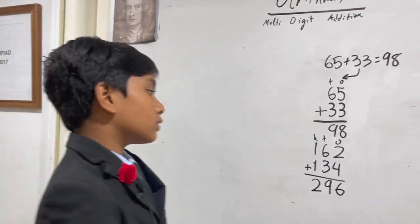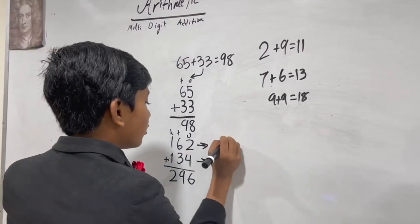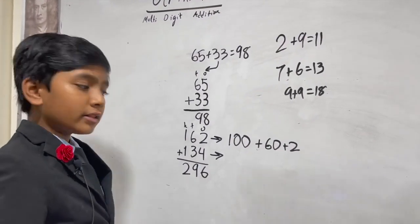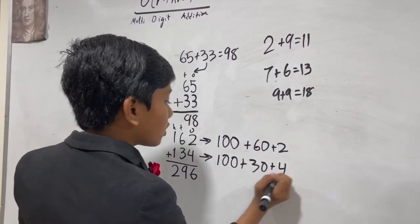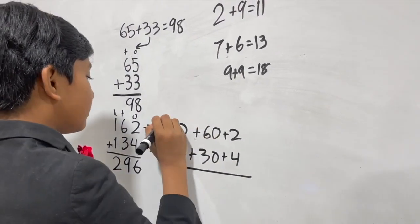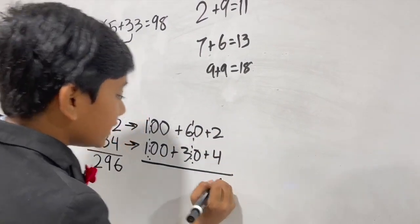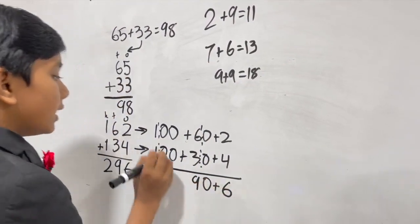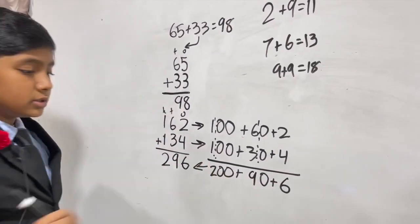I can actually explain the reason why this works. So, this is equal to 100 plus 60 plus 2 in expanded form. We talked about place value in another video. Go check that out. This is 100 plus 30 plus 4. Now, these zeros don't really do anything when we add them. So, we can essentially cut them out of the equation. So, the 2 and 4 become 6. The 60 and 30 become, well, 6 plus 3 is 9, and then you add the zero. And then, the 1 and 1 is 2, and you add the two zeros. 200 plus 90 plus 6, which is 296.